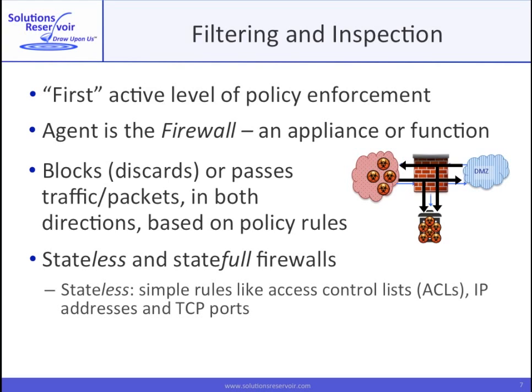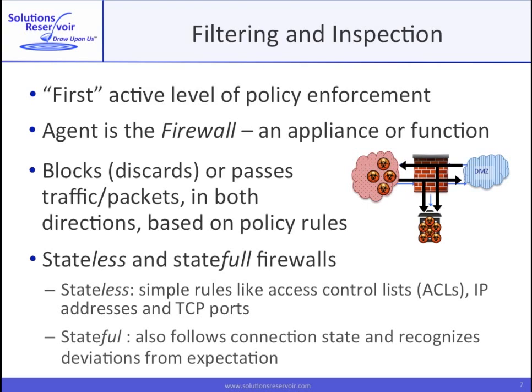Stateless firewalls make decisions about allowing or blocking a connection based on initial call parameters, like IP addresses and/or TCP ports. The more complex stateful firewall also monitors the connection in progress, and will act on deviations from expectation — for example, unexpected changes in sequence or acknowledgement numbers in the TCP frame header.